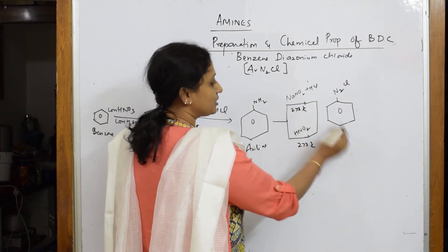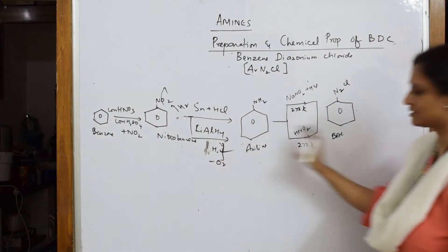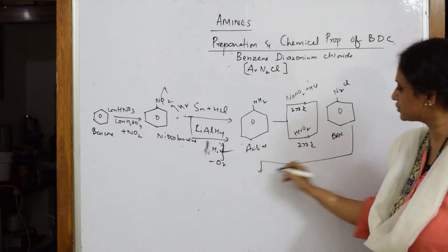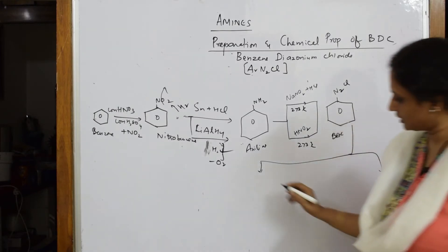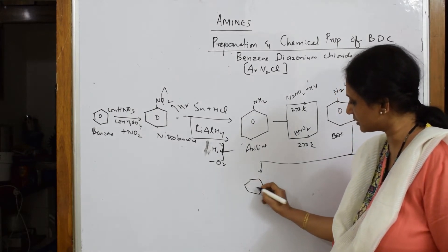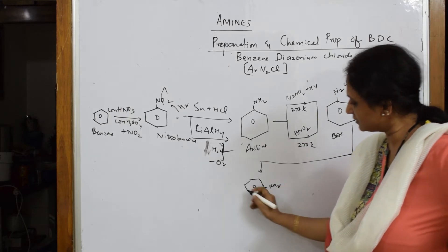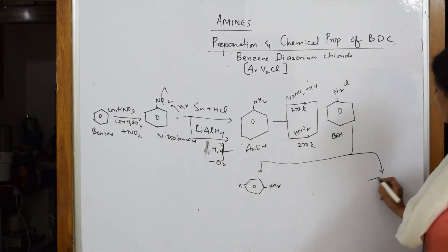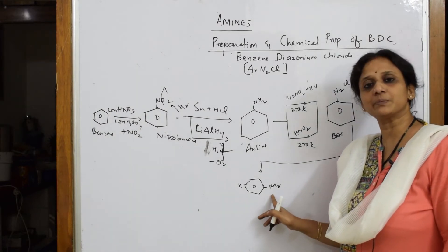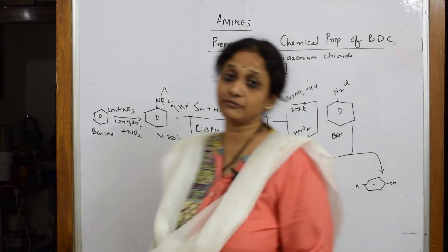Now I'm going to introduce two important things. I'm going to take aniline to BDC, and I'm going to take phenol. When BDC reacts with aniline with amine in the para position, and when BDC reacts with phenol with OH in the para position, such reactions are called coupling reactions.